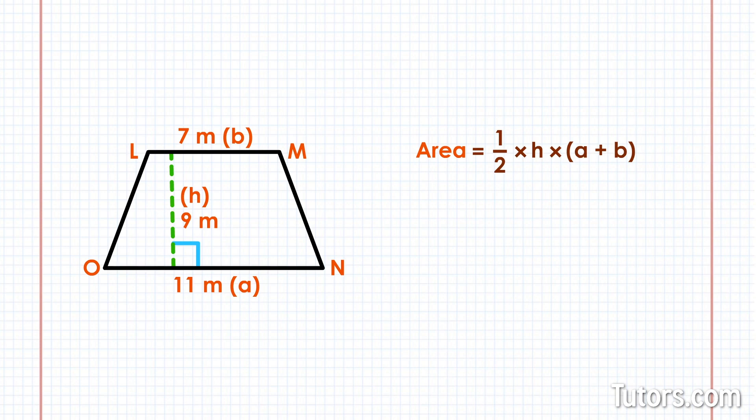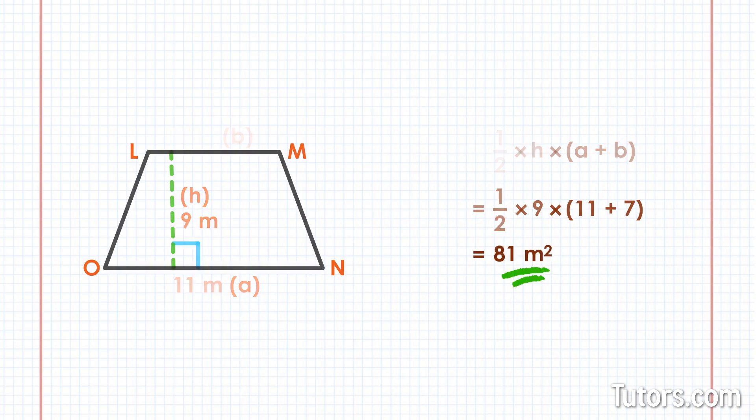So with trapezoid L-M-N-O, you could also have written the formula like area equals one-half times nine times the sum of eleven plus seven. Okay, are you ready for a harder example?